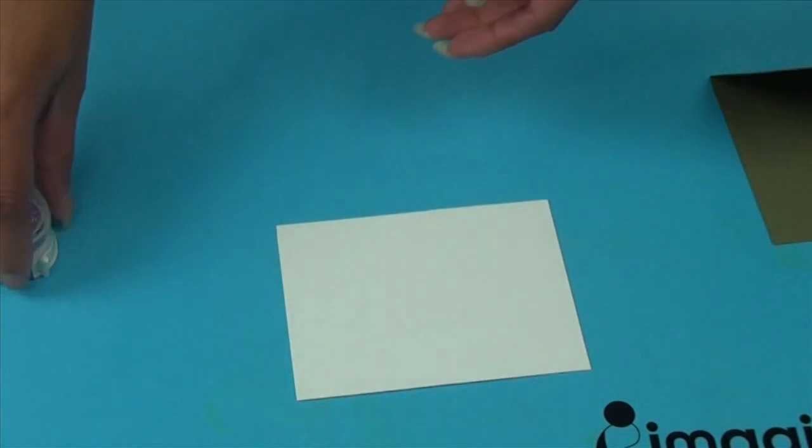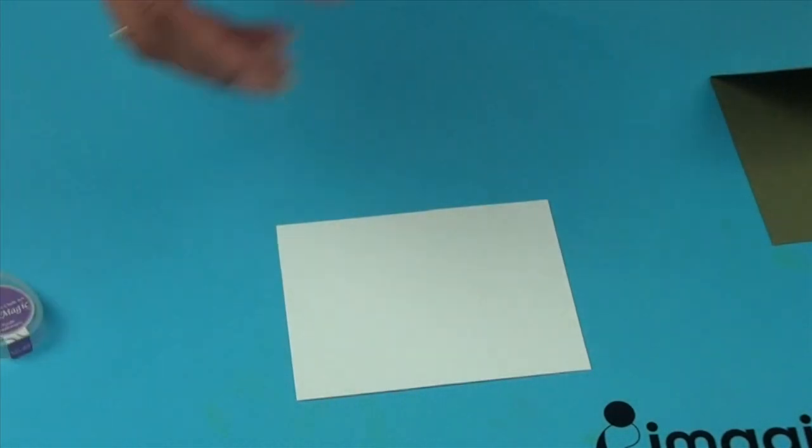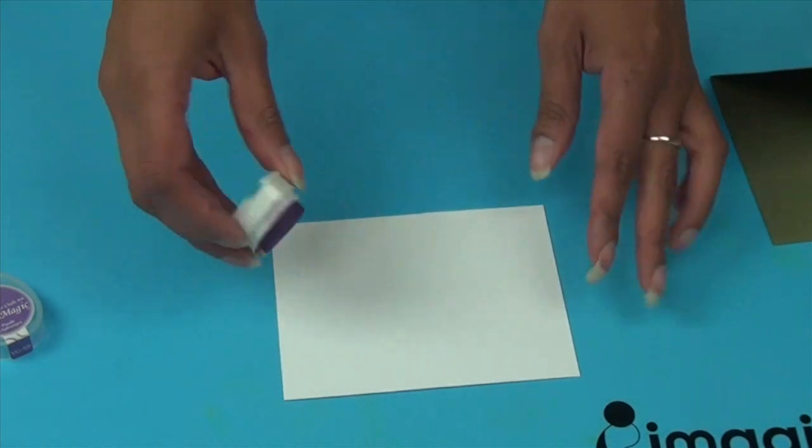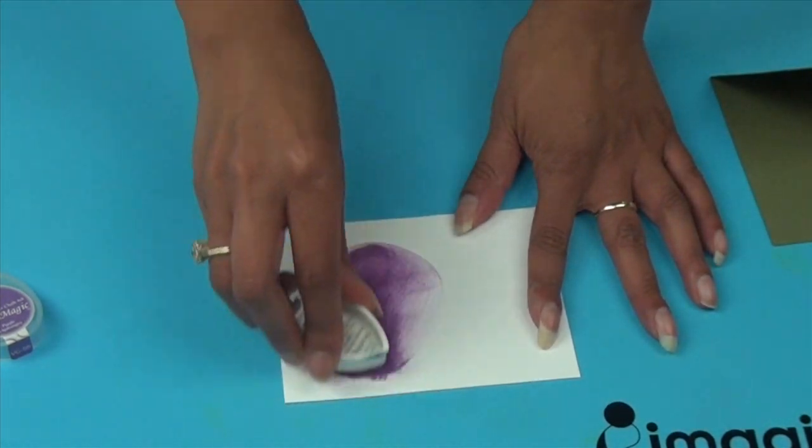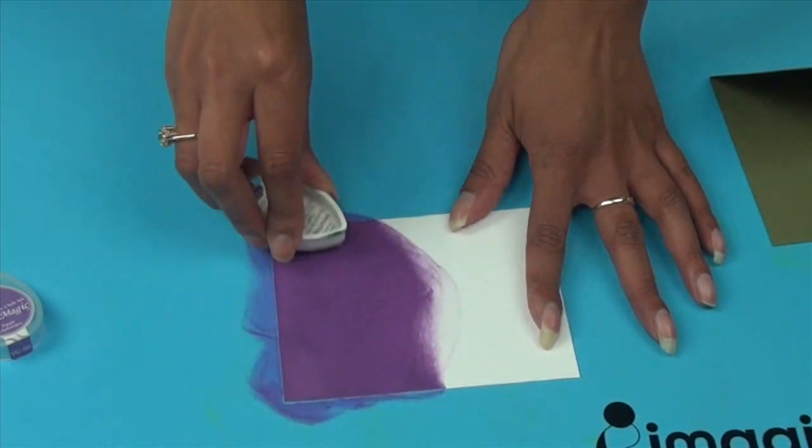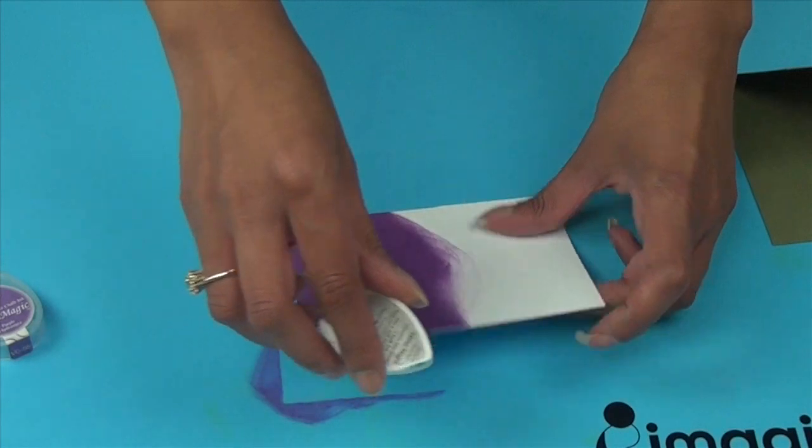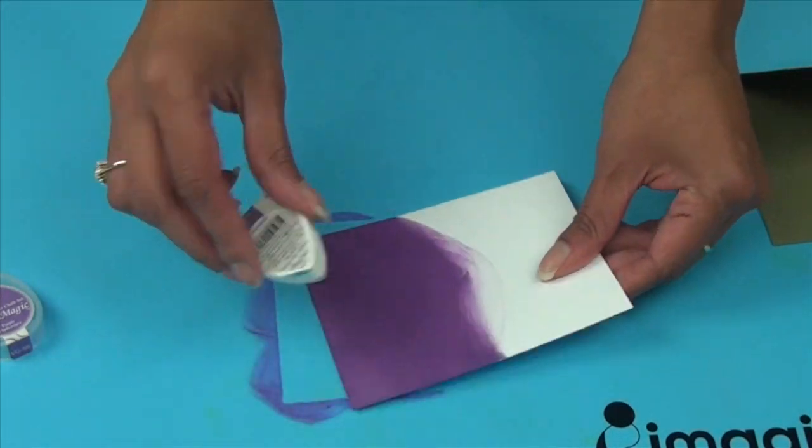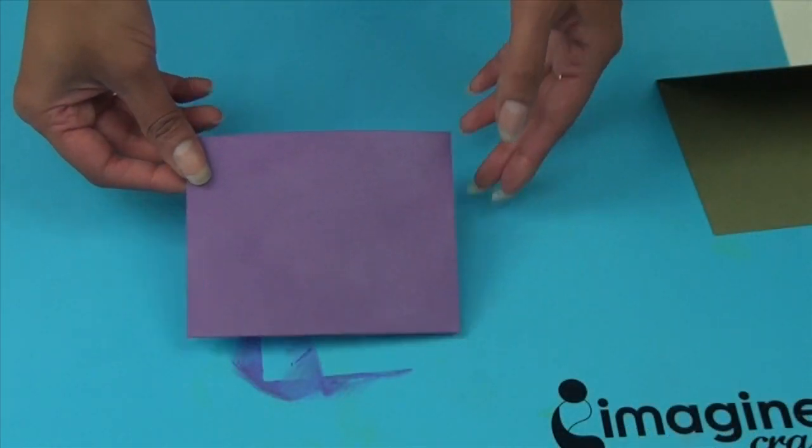The first step is to color our white cardstock. I'm using Versamagic ink in purple hydrangea to get a nice, deep purple color. Make sure you get the sides of the cardstock as well. Set your cardstock aside to dry.